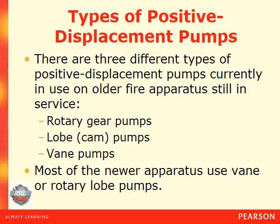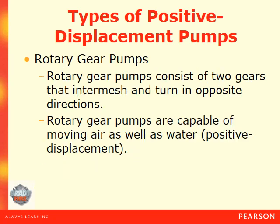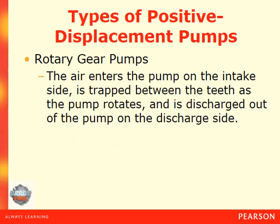There are three different types of positive displacement pumps currently in use on older fire apparatus: the rotary gear pump, the lobe pump, and the vane pump. Most newer apparatus use vane or rotary lobe pumps. Rotary gear pumps consist of two gears that intermesh and turn in opposite directions. They are capable of moving air as well as water. The air enters the pump on the intake side, is trapped between the teeth as the pump rotates, and is discharged out of the pump on the discharge side.